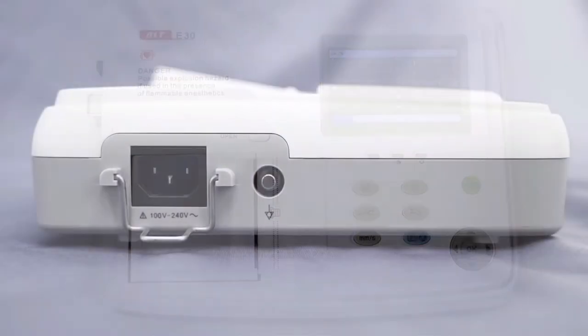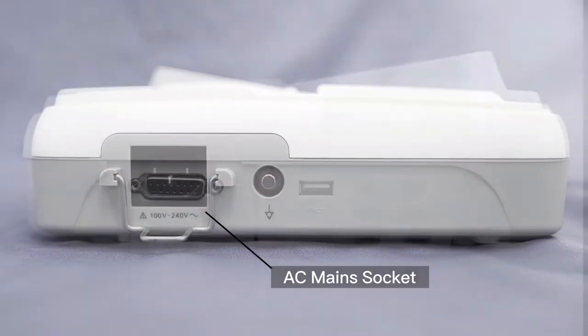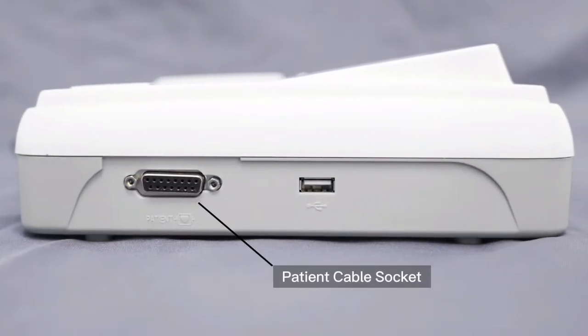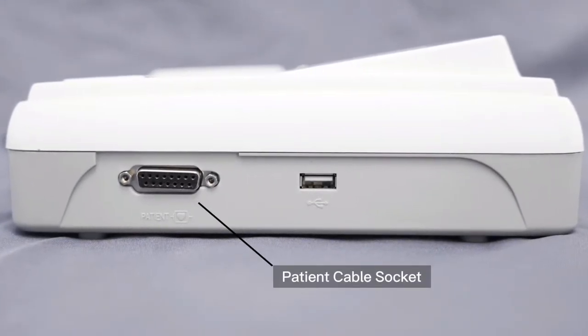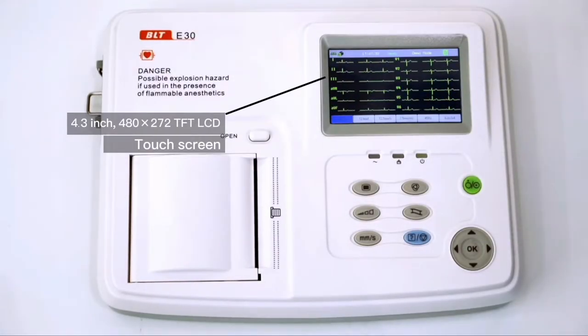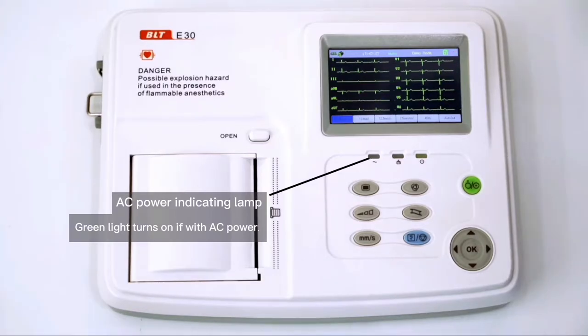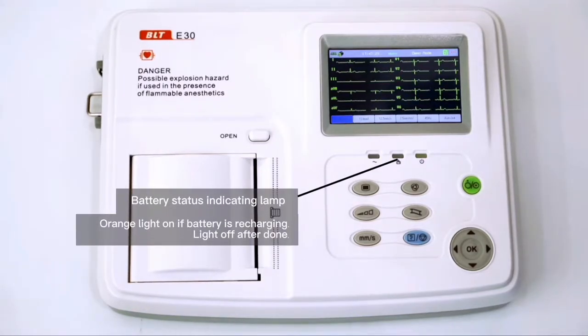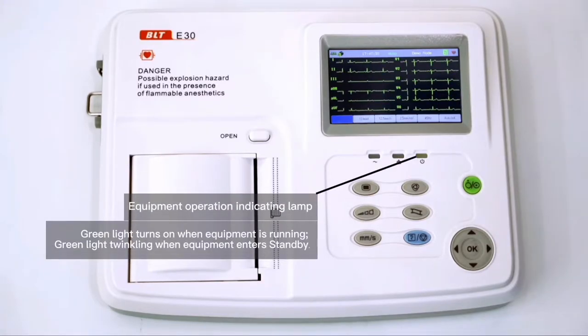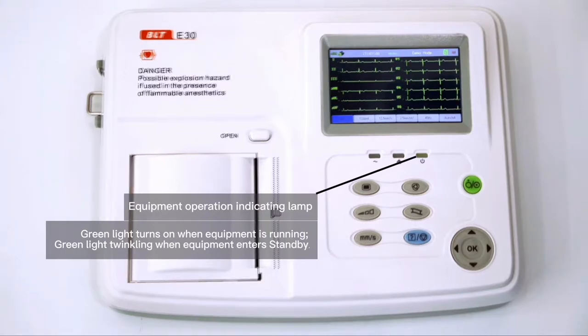The AC main power cable is connected at the left side of the device. The patient cable is connected on the right side of the device. This is the 7.0 inch TFT LCD display with touch screen. This is the AC power indicating lamp - green light turns on if AC mains power is connected. This is the battery status indicating lamp - orange light turns on if battery is recharging. The light will be off after recharging finished.